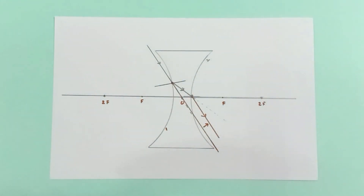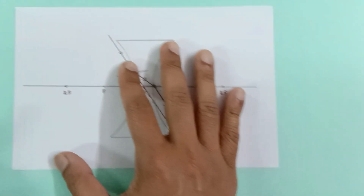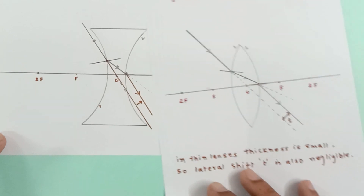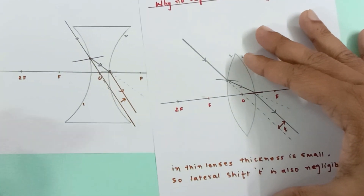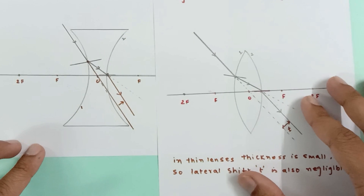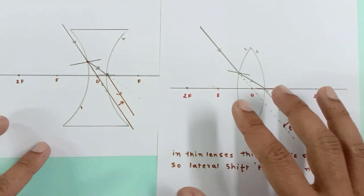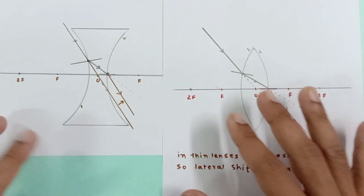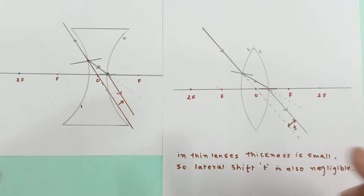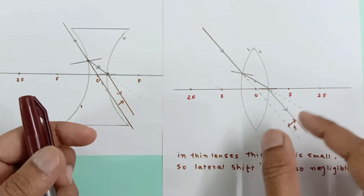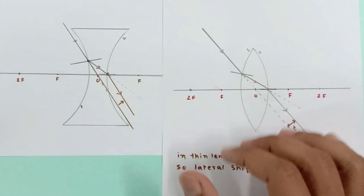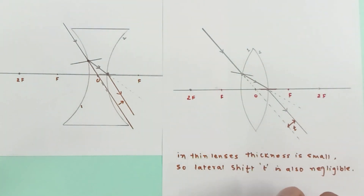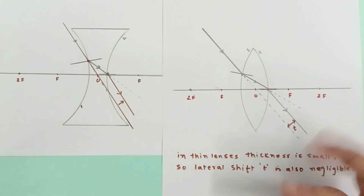As I mentioned, the thickness of the lens is very small so the lateral shift can be ignored. The key point is: for thick lenses, you cannot ignore the lateral shift — you must consider it. But from grade 8 to 12 in our syllabus we study thin lenses, and in thin lenses this thickness can be neglected. I hope you've understood the explanation. If you have any doubts, do comment. Thank you for watching.